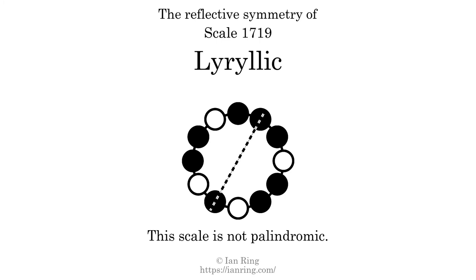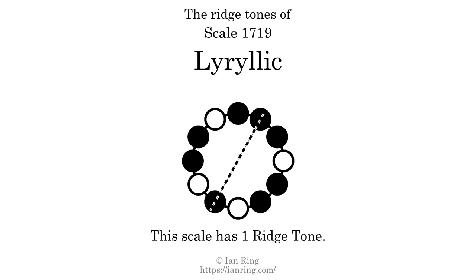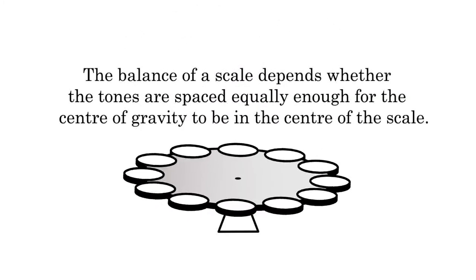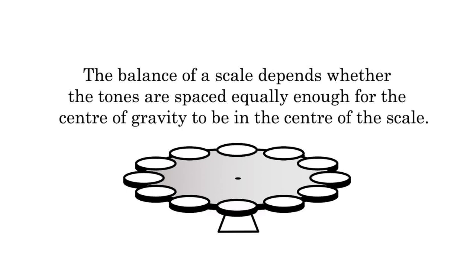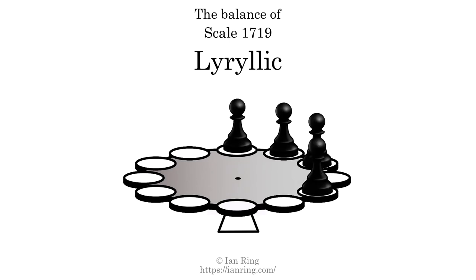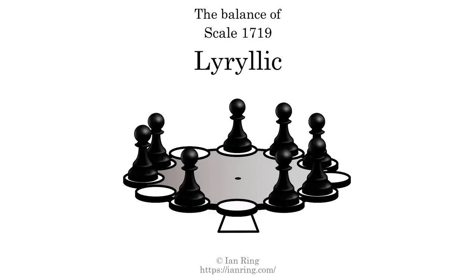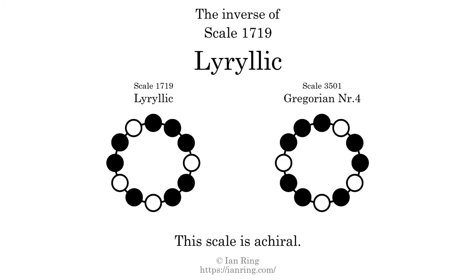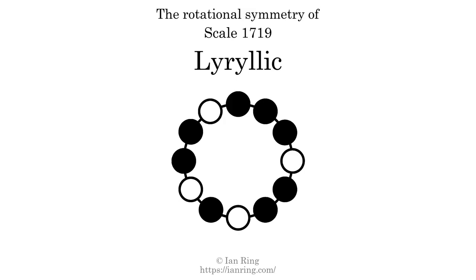This scale has reflective symmetry across an axis positioned one semitone from the root. This scale has a different pattern of intervals ascending and descending, so it is not palindromic. This scale has one ridge tone. The balance of a scale depends on whether the tones are spaced equally enough for the center of gravity to be in the center of the scale. This scale is not balanced. The inverse of this scale is a mirror image — it is what you get when the sequence of intervals is reversed. The inverse of this scale is Scale 3501, also known as Gregorian number 4. This scale is achiral, since it can transform into its own reflection by a rotational transformation. This scale has no rotational symmetry.